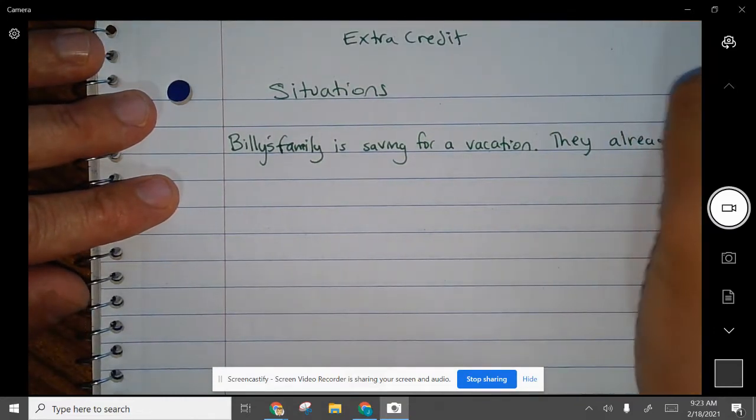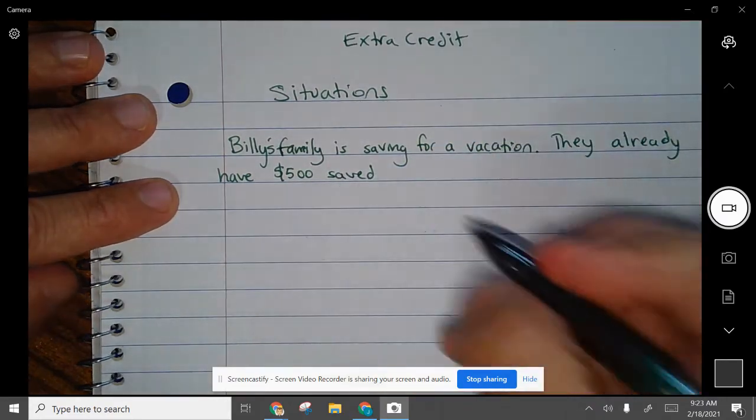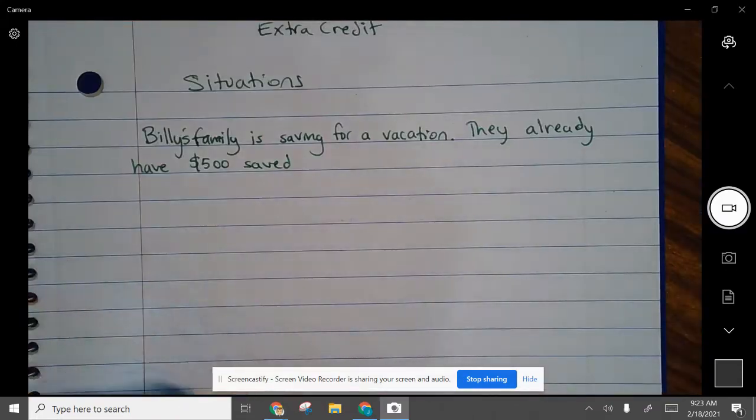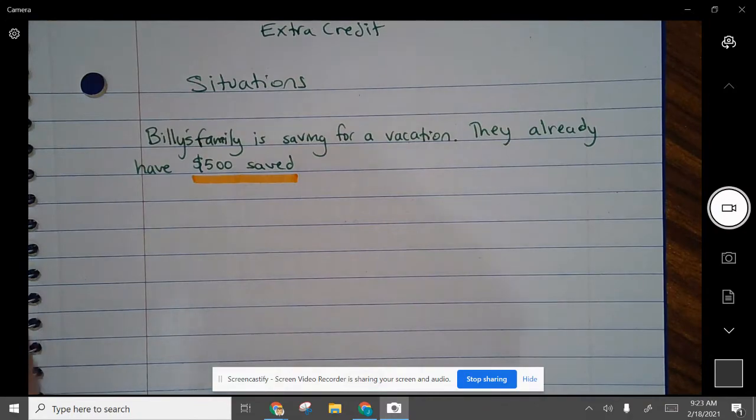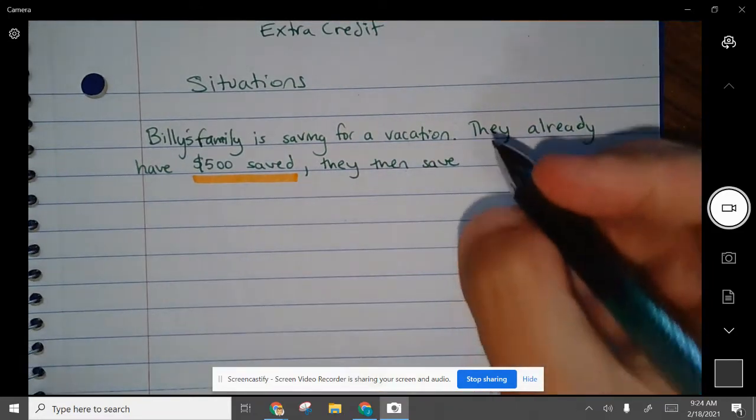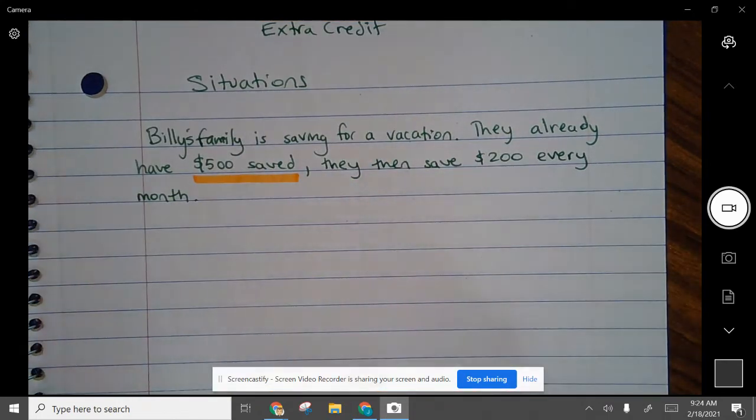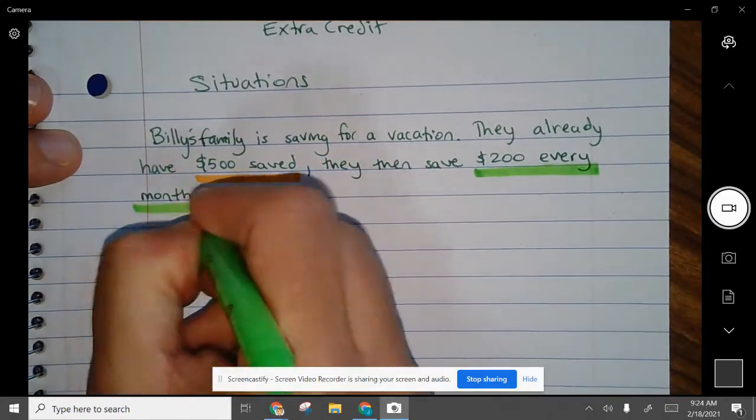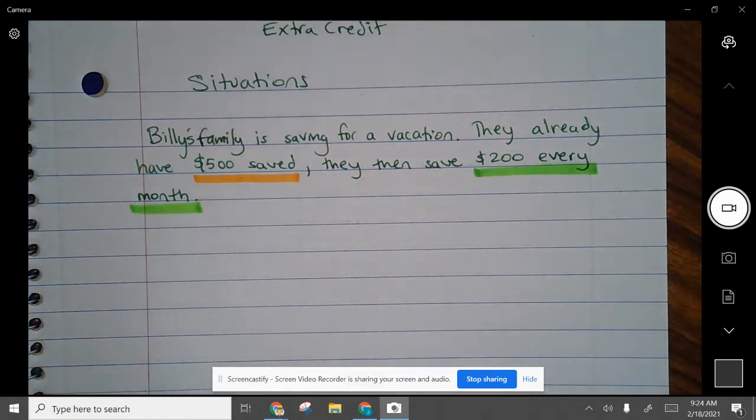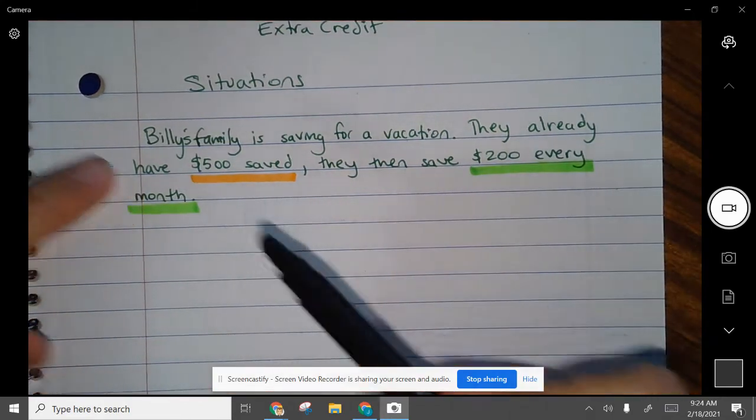So Billy's family is saving for a vacation. They already have $500 saved. All right, they already have $500 saved. That's important. They then save $200 every month. They then save $200 every month.